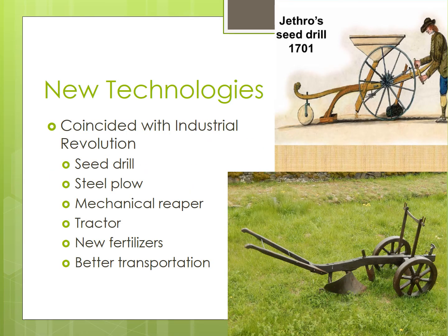Since the second agricultural revolution coincided with the Industrial Revolution, let's examine some of the new technologies that helped to increase agricultural production. The seed drill was used for planting seeds. It sowed the seeds by shooting them directly into freshly dug holes, thereby increasing efficiency and decreasing waste.